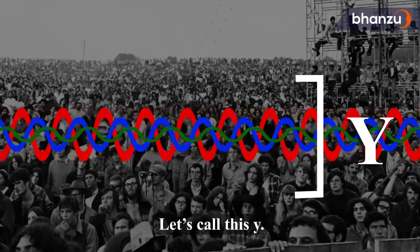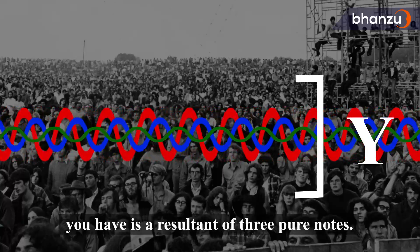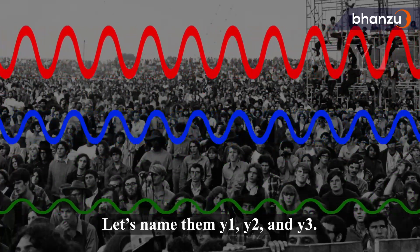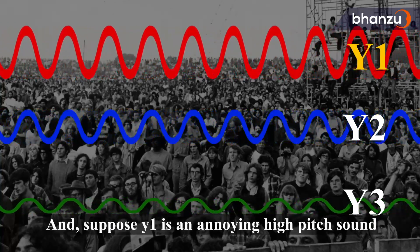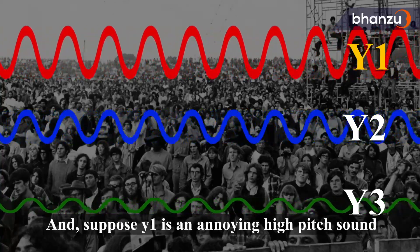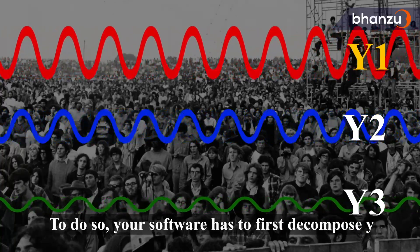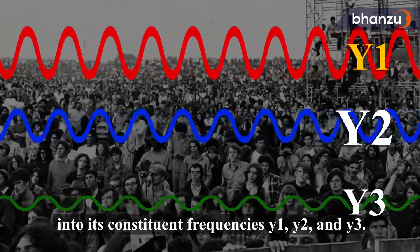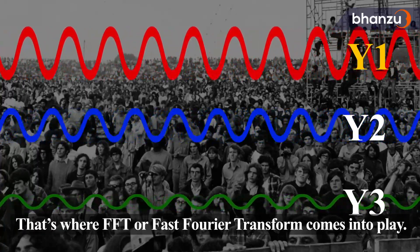Let's call this Y. For the sake of simplicity, let's say the raw file you have is a resultant of three pure nodes — let's name them Y1, Y2, and Y3. Suppose Y1 is an annoying high-pitched sound you want to eliminate. To do so, your software has to first decompose Y into its constituent frequencies Y1, Y2, and Y3, and that's where FFT, or the Fast Fourier Transform, comes into play.